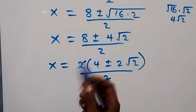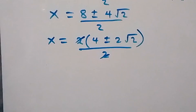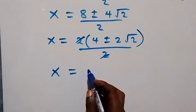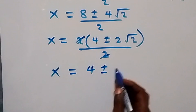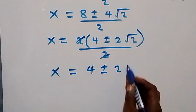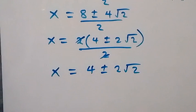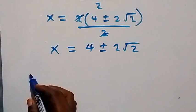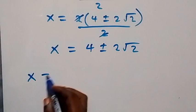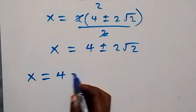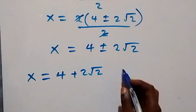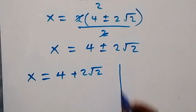So we have two values of x. The first one, x1, equals 4 plus 2 root 2, and the second one, x2, equals 4 minus 2 root 2.